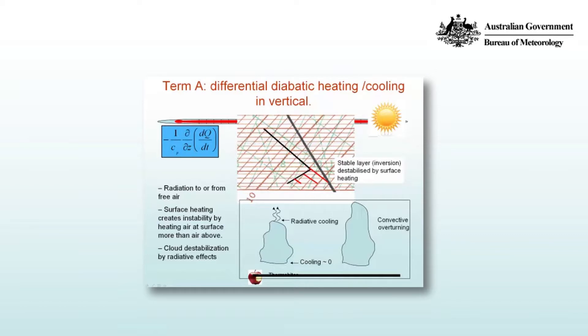That means that q dot decreases with height, or d/dz(dq/dt) is less than zero. So -1/Cp * d/dz(dq/dt) is positive. Which means γ is increasing over time, or dT/dz is decreasing, becoming more negative.